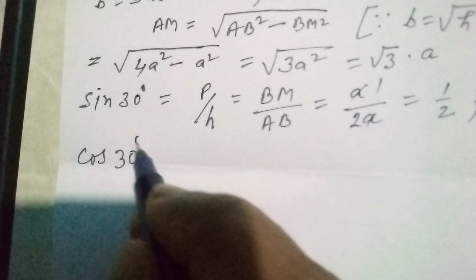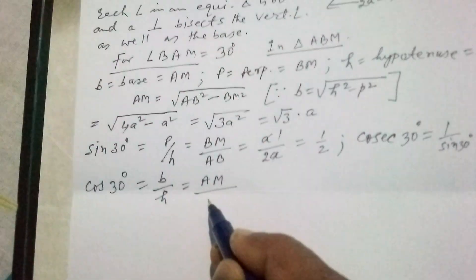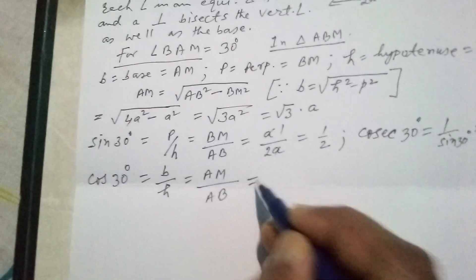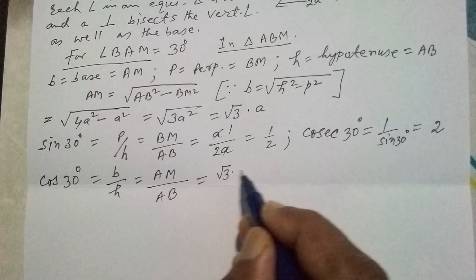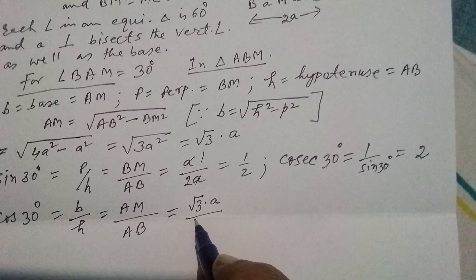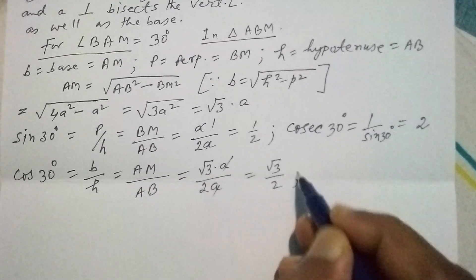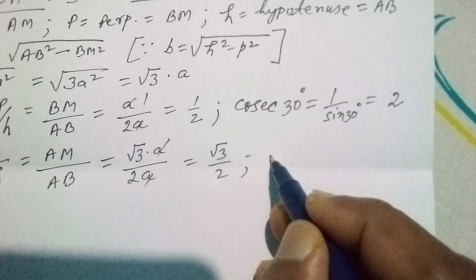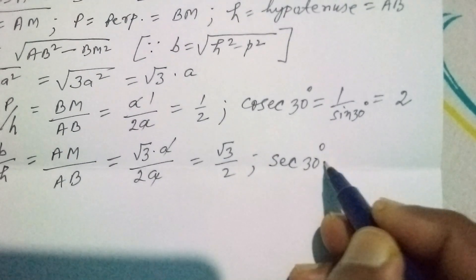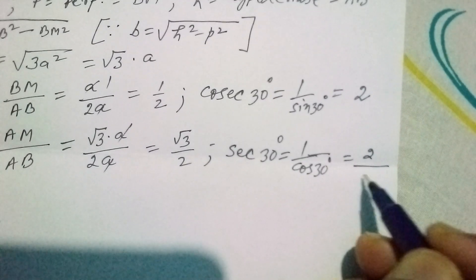For cos 30 degrees, cosine equals base by hypotenuse. The base here is AM and H is AB. AM equals √3·A and AB equals 2A; the A's cancel, giving cos 30° = √3/2. Since cosine and secant are reciprocal to each other, sec 30° equals 1 divided by cos 30°, which equals 2/√3.